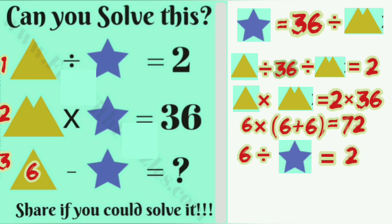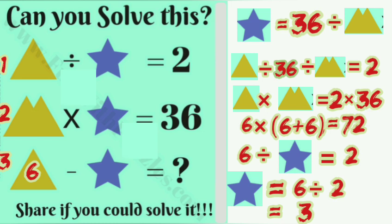Now we go to equation number three: triangle minus star is equal to what? Triangle is equal to 6, star is equal to 3, so we put this in question number 3. 6 minus 3 is equal to 3.